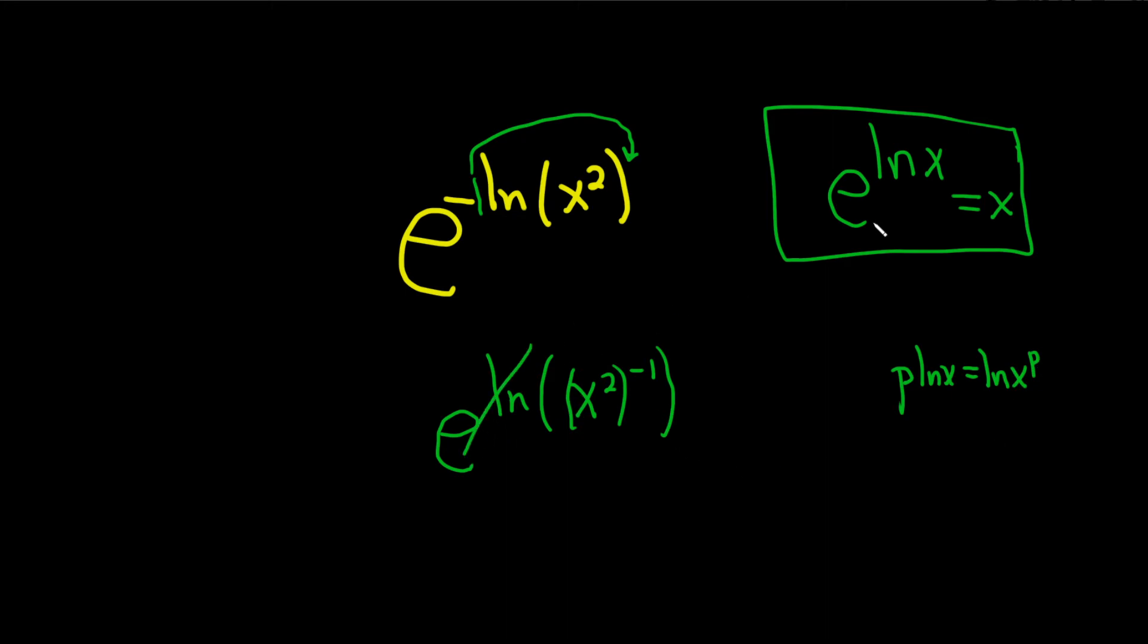All right, now these cancel. We're using this formula and so we just get this x squared to the negative 1.